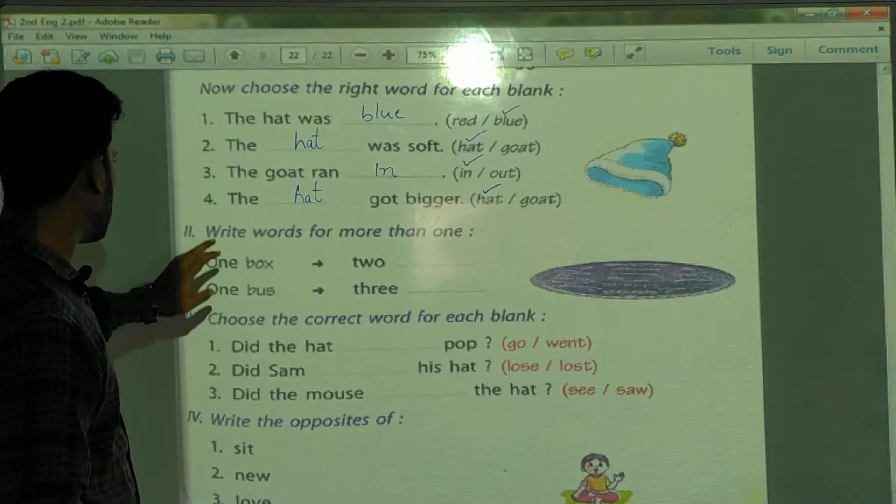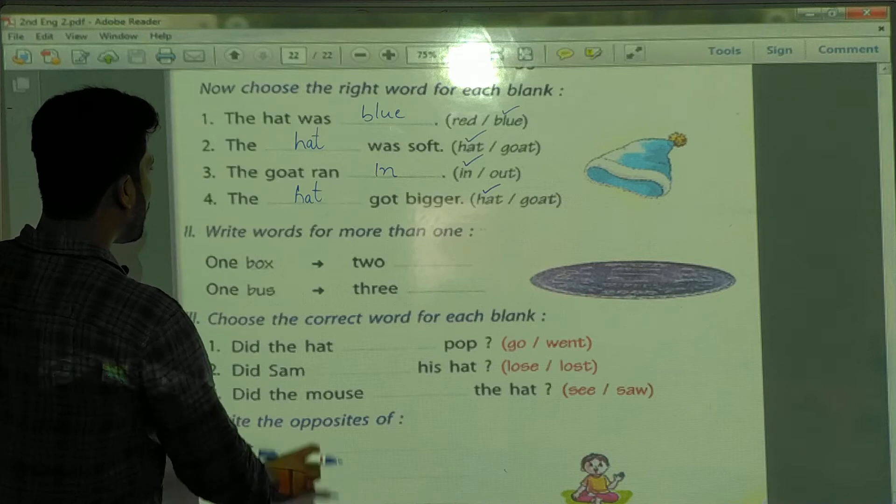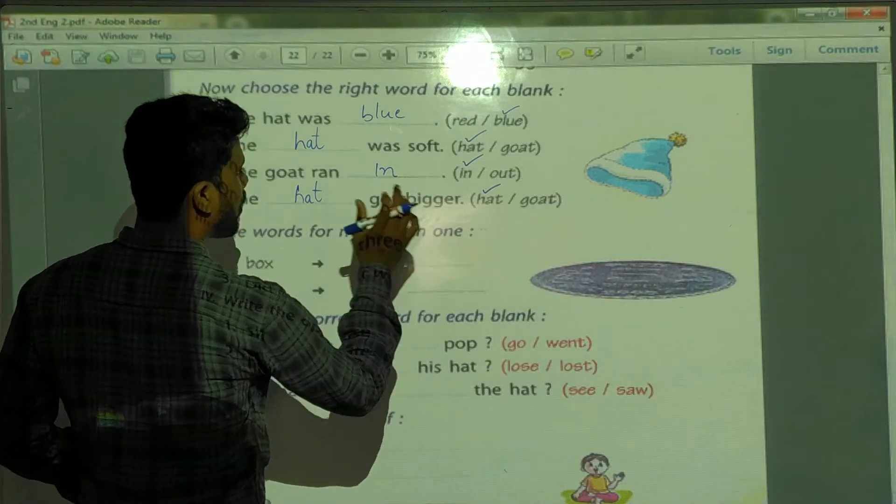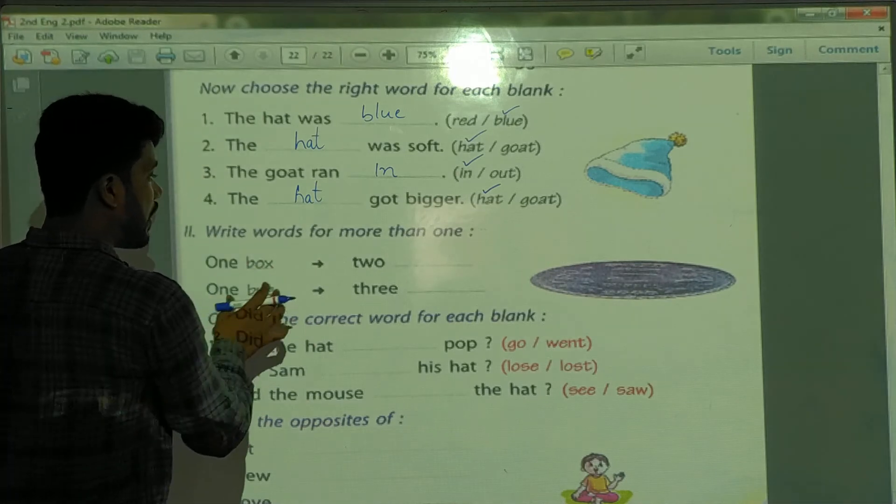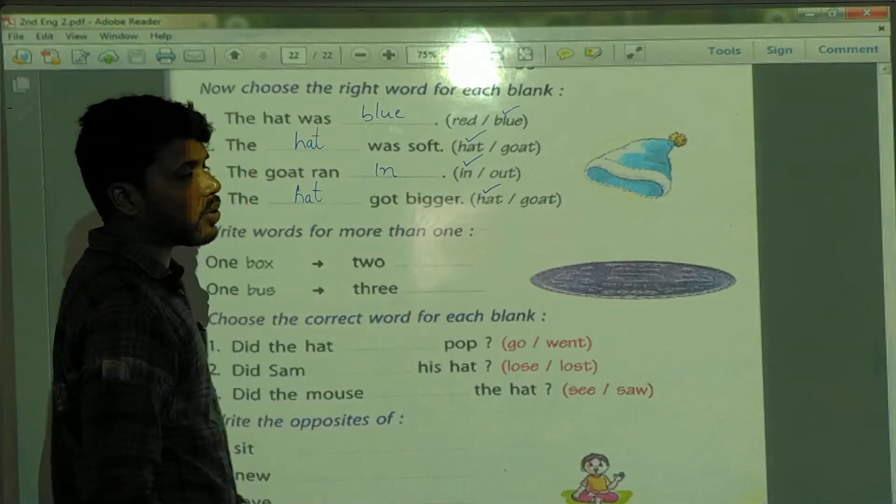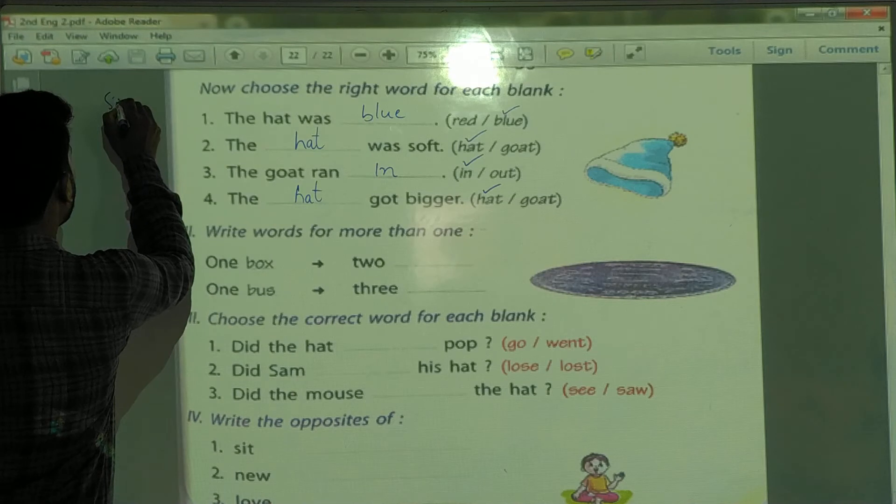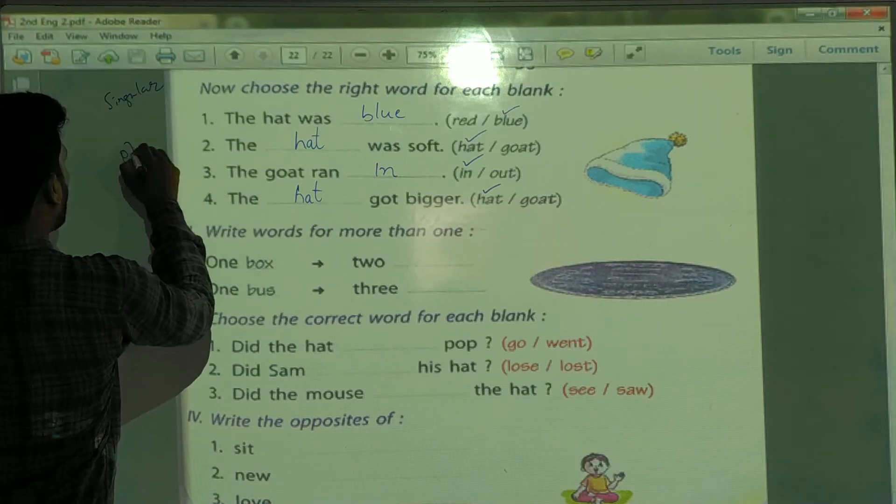And second topic is, second bit is, write words for more than one. Here, singulars are there. Here, singulars are there. We have to write plural. So, first, what is singular and what is plural that we have to know.